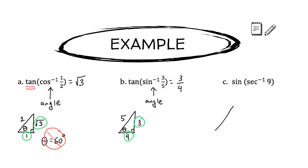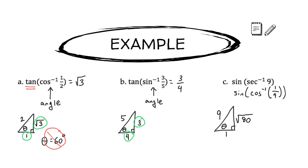One last problem: find sine of secant inverse of 9. Since there's no secant inverse button, rewrite as sine of cosine inverse of 1/9. This means an adjacent of 1 and hypotenuse of 9. The opposite is the square root of 9 squared minus 1 squared, which is the square root of 80, also known as 4 root 5. Sine of the angle is opposite over hypotenuse, giving 4 root 5 over 9. That's the answer.